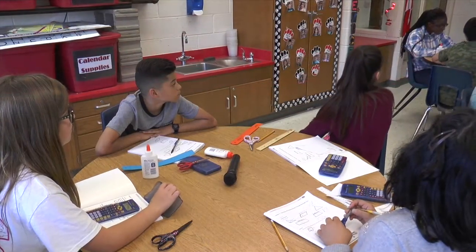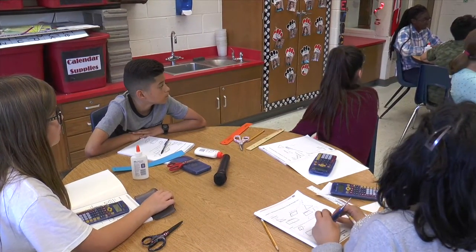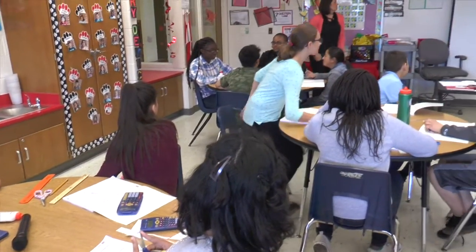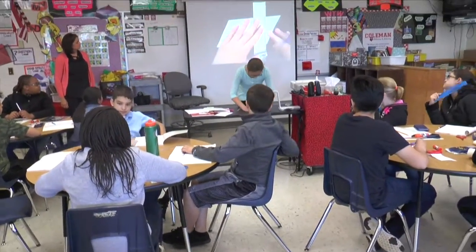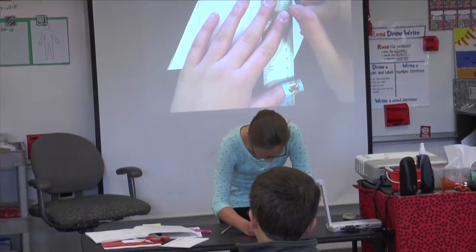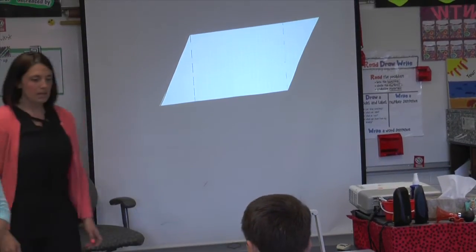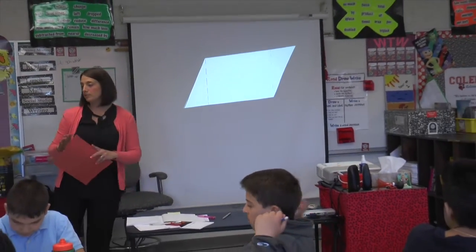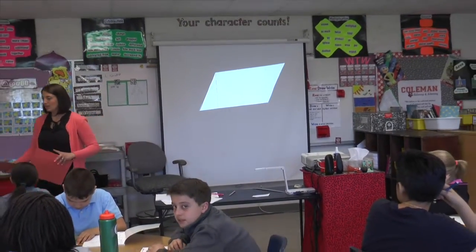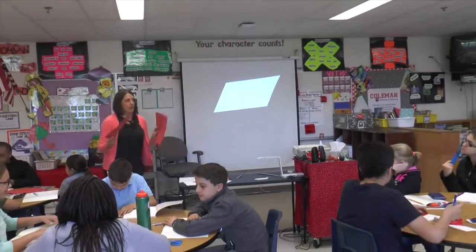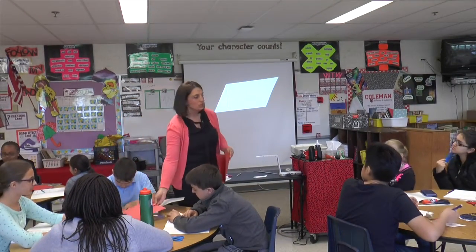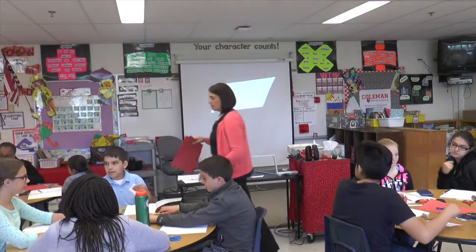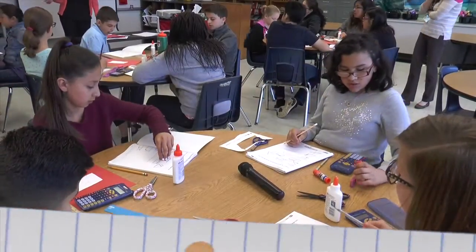Is that the only way I can make this shape into a rectangle? Where else could I have done it? Megan, why don't you show it? Here's what I'd like you to do now. At your table, be very careful. I want you to cut on that dotted line, and then on the red paper, glue your shapes down so that they form a rectangle.